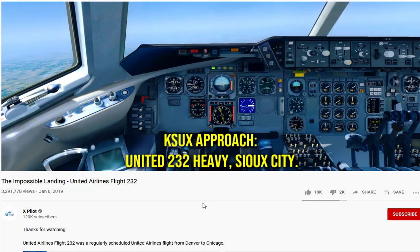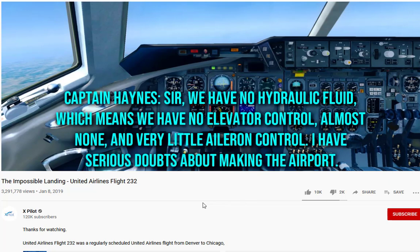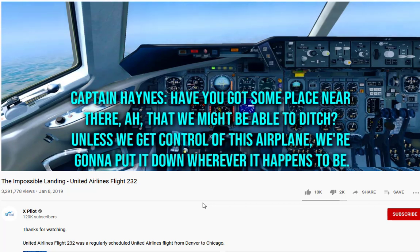United 232 have issue sitting. We have no hydraulic fluid which means we have no elevator control, almost none and very little aileron control. I have serious doubts about making the airport. Have you got someplace near there that we might be able to ditch? As you get control of this airplane we're going to put it down wherever it happens to be.